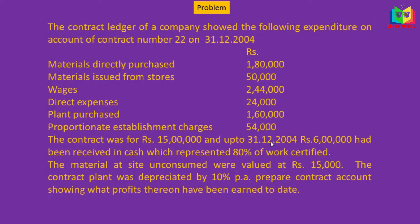Up to 31/12/2004, rupees 6 lakh had been received in cash, which represents 80% of work certified. The material at site at the end was valued at rupees 15,000. The contract plant was depreciated by 10% per annum. We need to prepare the contract account showing what profits have been earned to date.